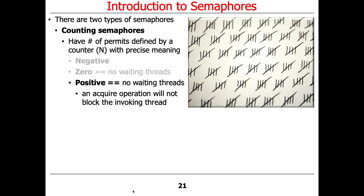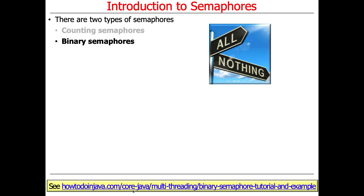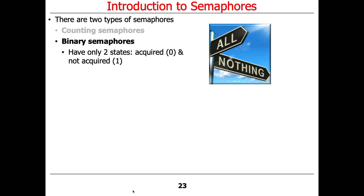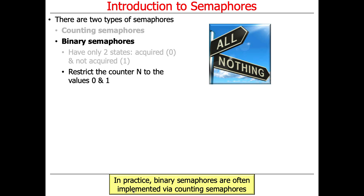So those are the three states: negative means threads are waiting; zero means nobody's waiting but it's not available; positive means nobody's waiting and someone can grab it without waiting. The other form is called binary semaphores — basically counting semaphores restricted to only the values zero and one. Zero means acquired or in use; one means not acquired or available. Interestingly, Java only has one type called a semaphore, which handles both, and it all depends on what the count is. Binary semaphores can be implemented by counting semaphores restricted to zero and one.